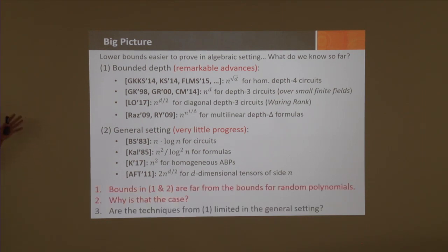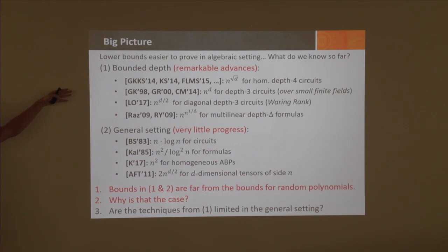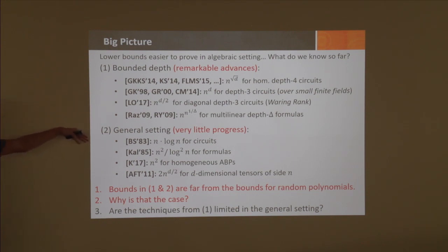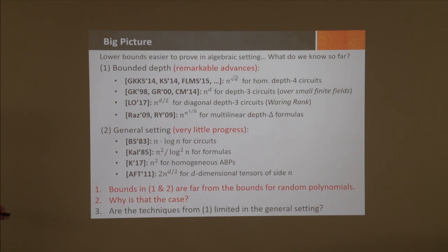When you see these remarkable differences, you wonder: these bounds, even though they're very strong in bounded depth, are still very far from the bounds you obtain just by counting for random polynomials. The general circuit bounds are far by any measure. This makes you wonder—were the techniques in the bounded depth setting limited to the general setting, or are they even limited to prove lower bounds for random polynomials? Is there any barrier for the algebraic setting?